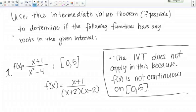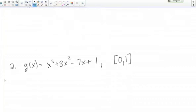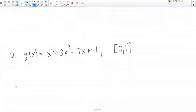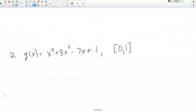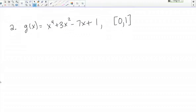Okay, let's do another example. I have a number 2 below. Same directions. We want to use the Intermediate Value Theorem if possible to determine if the function has any roots on the given interval. Okay, so now we've got g of x and it's a nice polynomial. So I've got g of x equals x to the 4th plus 3x squared minus 7x plus 1, and I'm looking at the interval from 0 to 1.